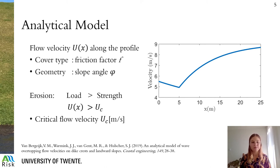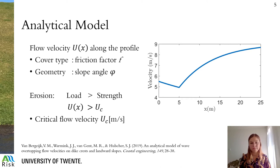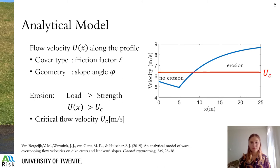Now I will tell you about the analytical model. We have developed new formulas for the flow velocity U along the dike profile. We can change the cover type by adapting the friction factor F, and the geometry is included in the slope angle. We can also include the length of the crest, the slope length, and the berm width. An example shown in the figure demonstrates that the flow velocity decreases over the crest for the first five meters due to bottom friction, then increases on the slope due to gravitational acceleration. For erosion, we say erosion occurs when the load is larger than the strength. In this simple case, the load is determined only by the flow velocity and the strength by a critical flow velocity U_c, so erosion occurs when the model flow velocity exceeds U_c.